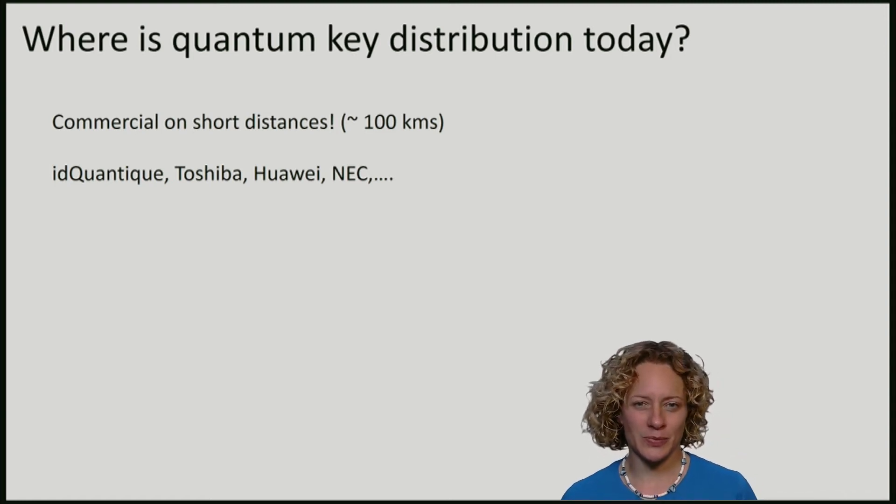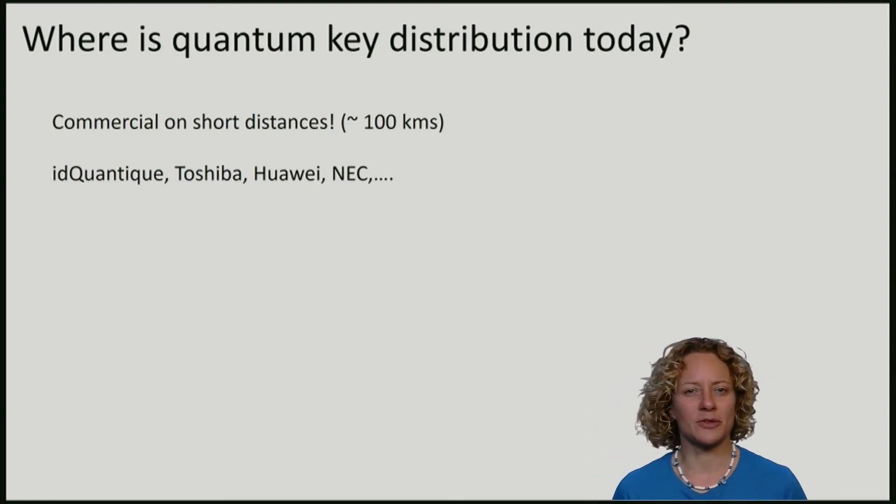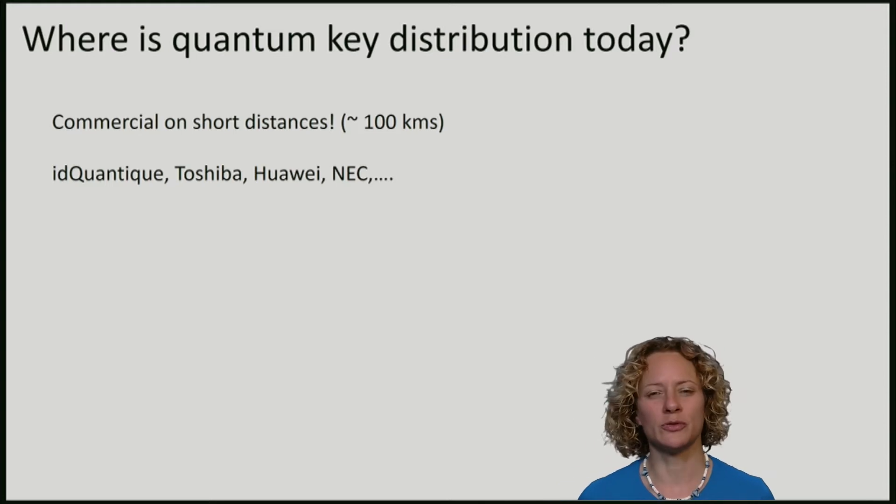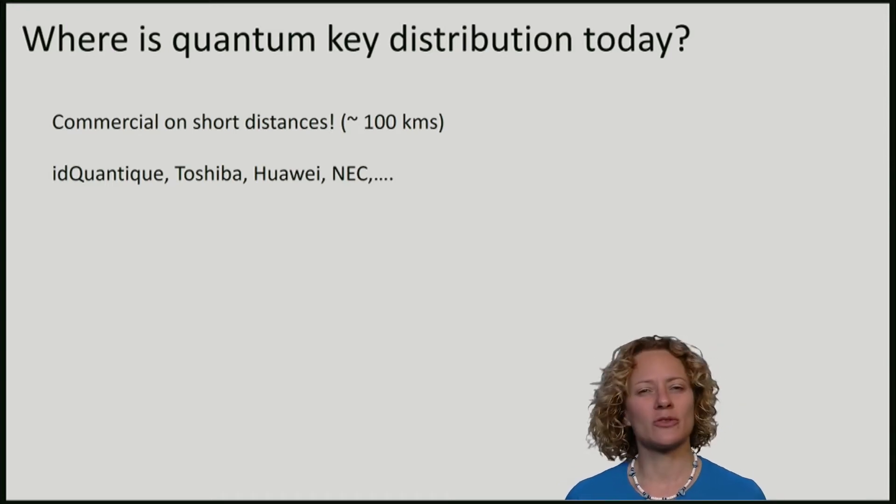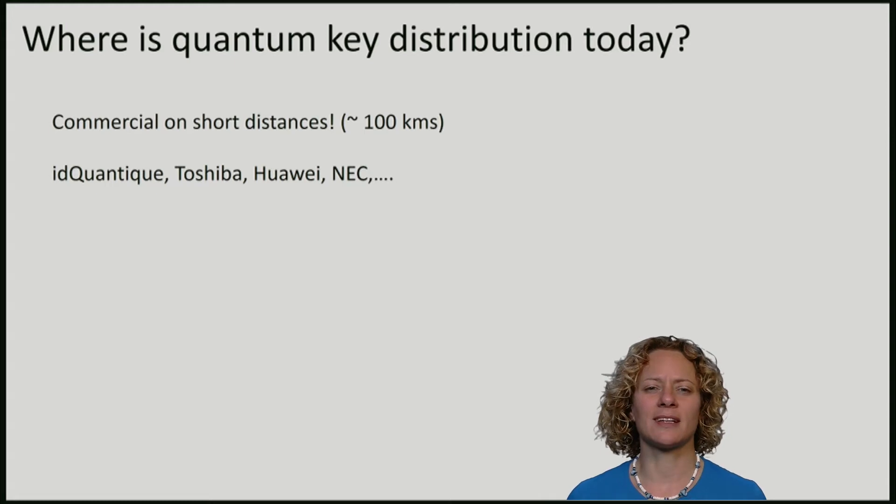Before we go into quantum key distribution, where we will construct protocols and prove that they are secure, it is useful to remember what we exactly want to protect against, and what resources Alice and Bob have.